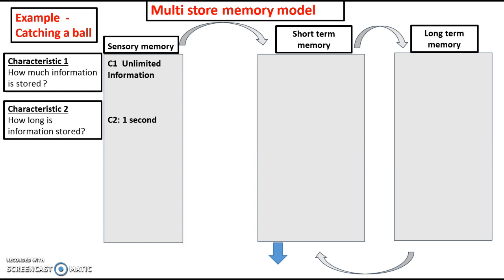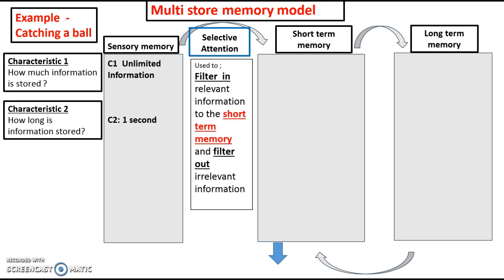Because you can only store it for one second, once it comes in we have to pick out the most important piece of information. For example, if we're catching a cricket ball, we've got all this kind of meaningless information and we use a process called selective attention. Selective attention basically allows us to filter in the relevant piece of information to the short-term memory and filter out the irrelevant information. In the case of catching a ball, selective attention allows us to filter in the ball and filter out the crowd, the opposition, and whatever else is in the environment.